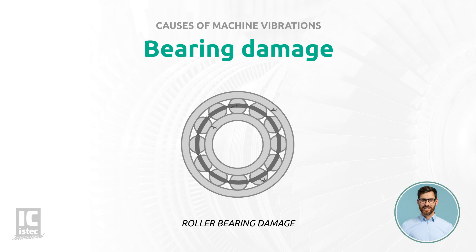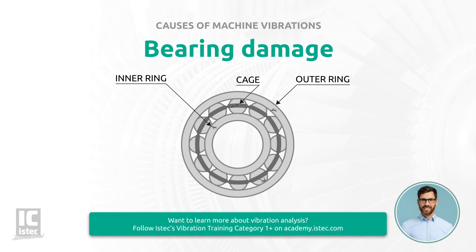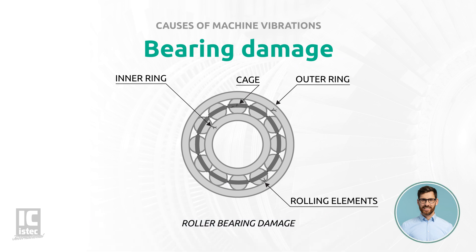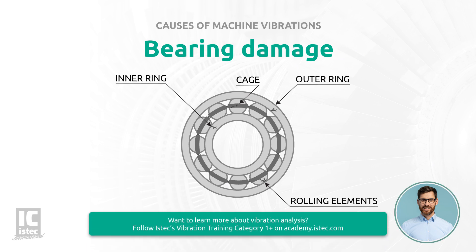Roller bearings. A roller bearing can be damaged in several ways, and each of these damages could cause excessive vibrations. The types of damage include: damage to the inner ring, damage to the outer ring, damage to the cage, and damage to the rolling elements. Each part of a roller bearing has its own frequency. By calculating these frequencies, it is possible to use vibration analysis to determine whether the vibrations are caused by bearing damage.